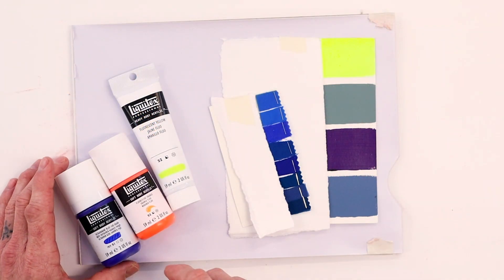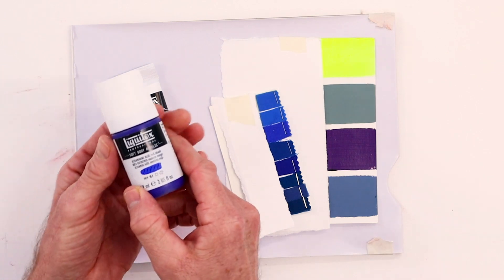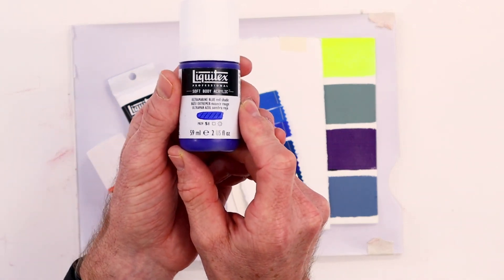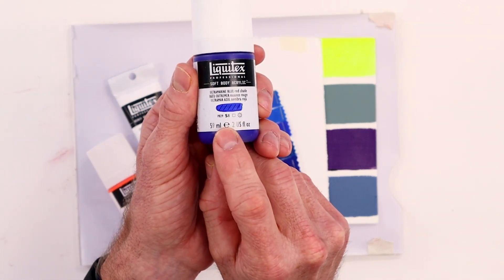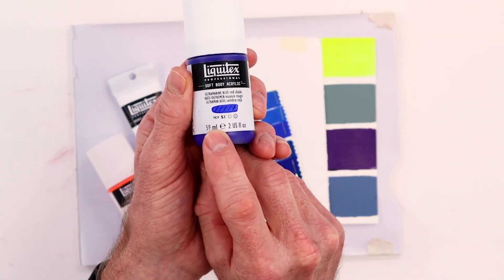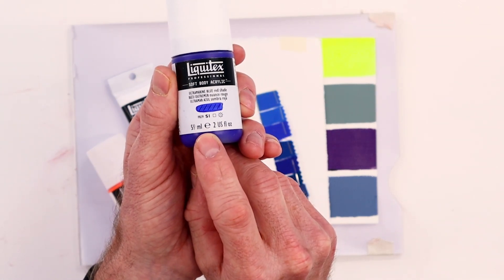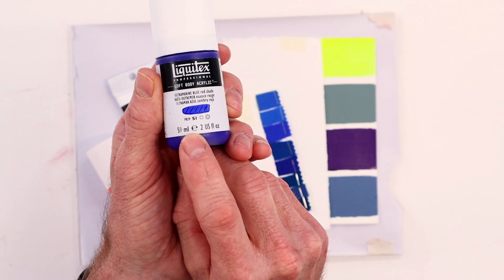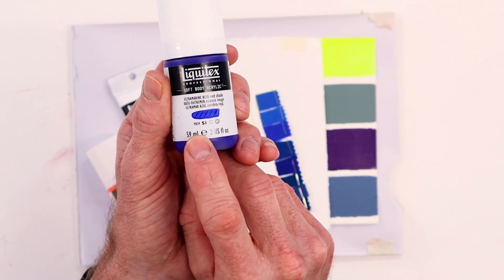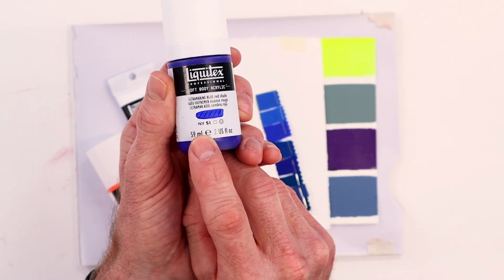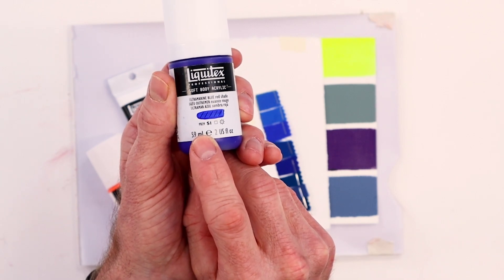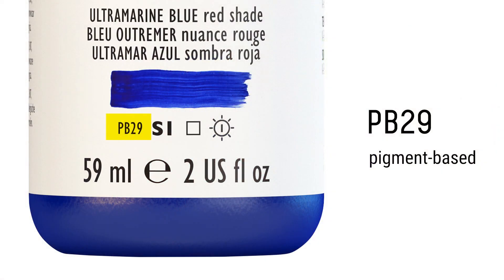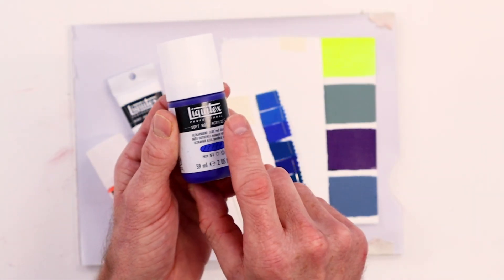The first thing I want to show you — just to reiterate this — is ultramarine blue. Our label, our color index number says PB, pigment blue, 29. That's ultramarine blue. So that's pigment-based.